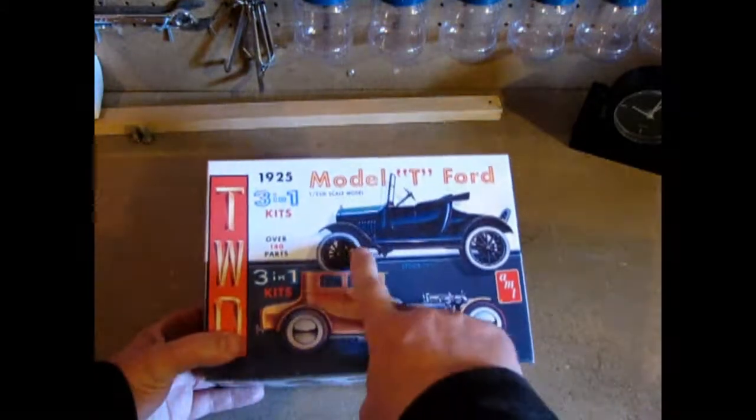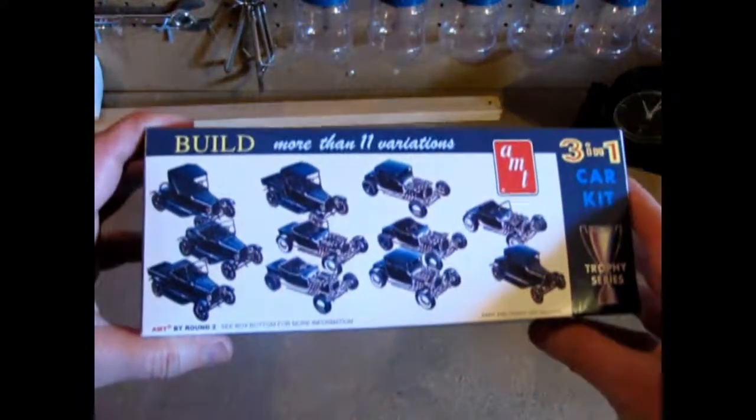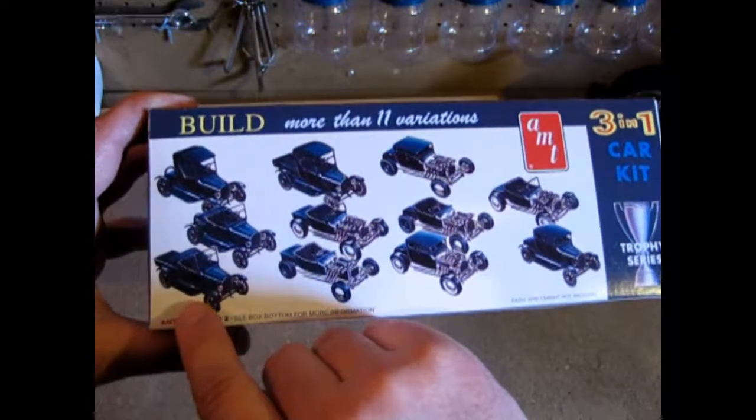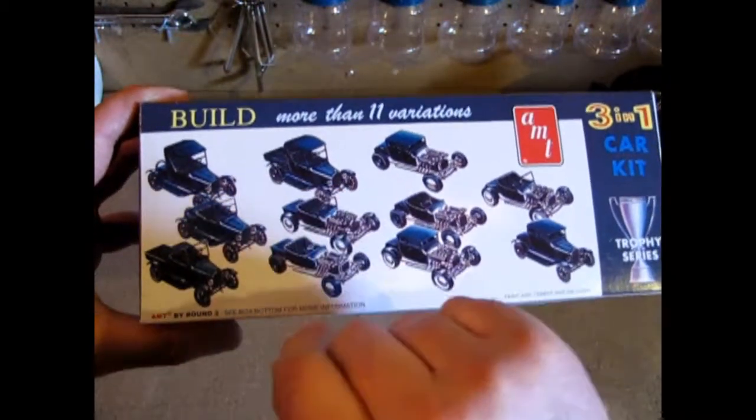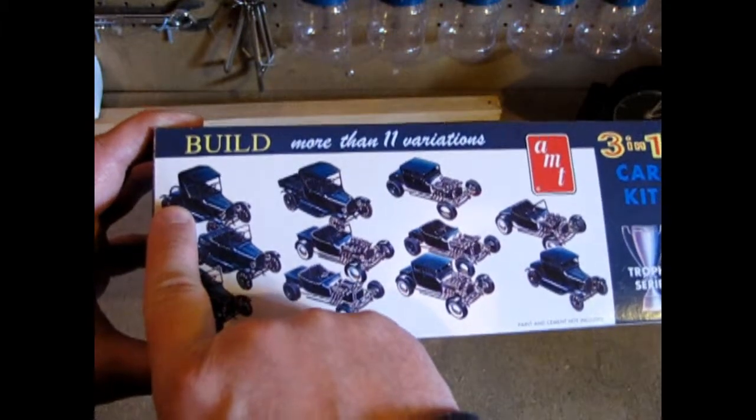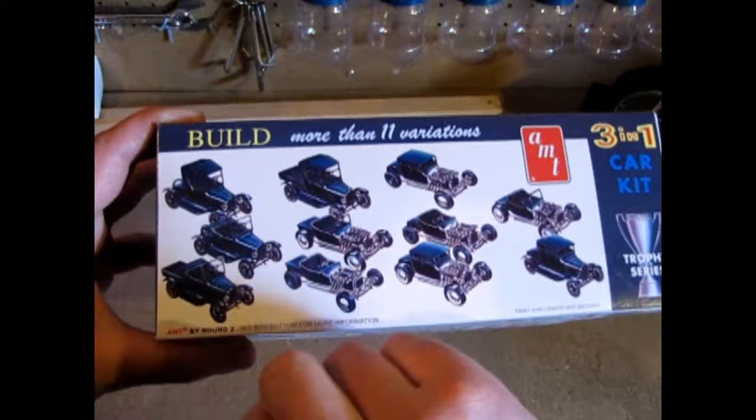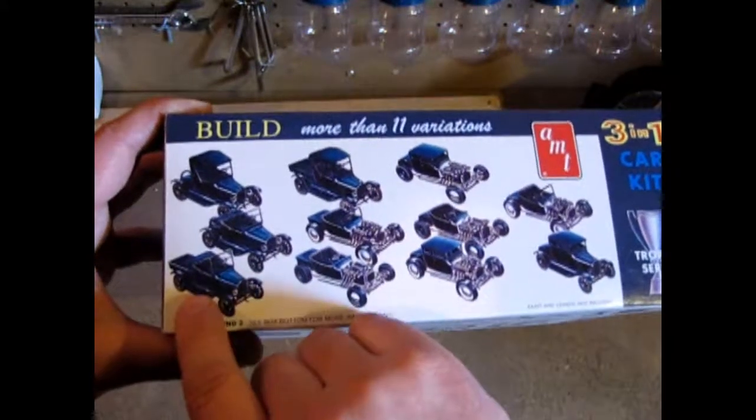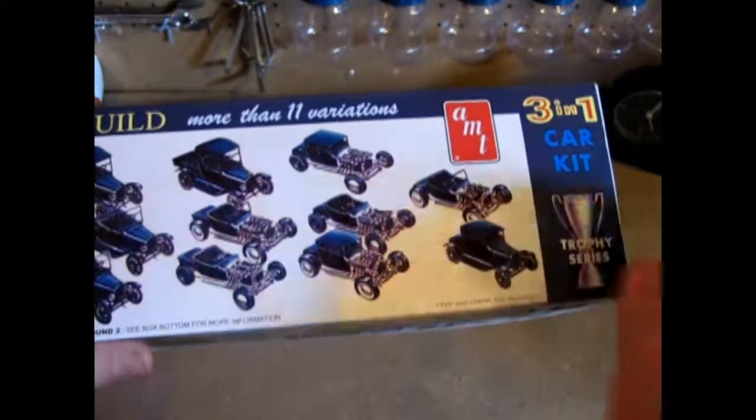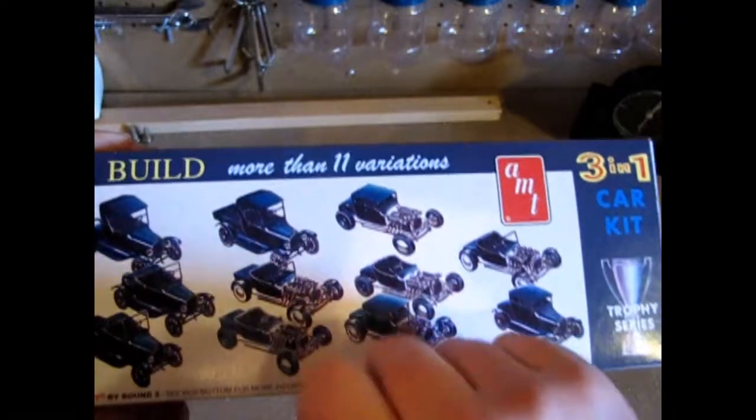Now if you've seen some of my other videos, you'll know that this is the same Model T as the Laurel and Hardy. But here they show you all these different cool options you can do. So you can do three different versions of a stock car. Actually you can do four, but it's kind of a trick. A turtle back roadster, turtle deck roadster with the top up or the top down.